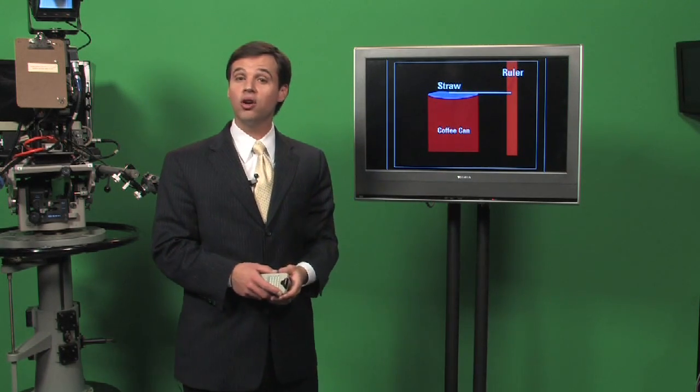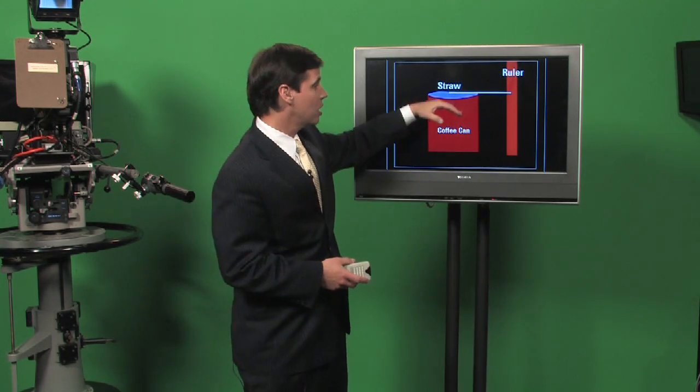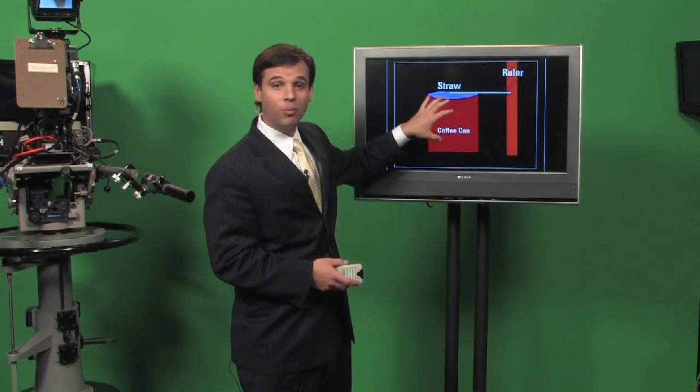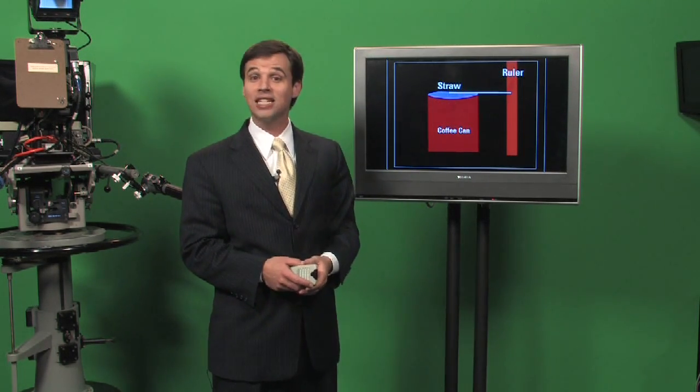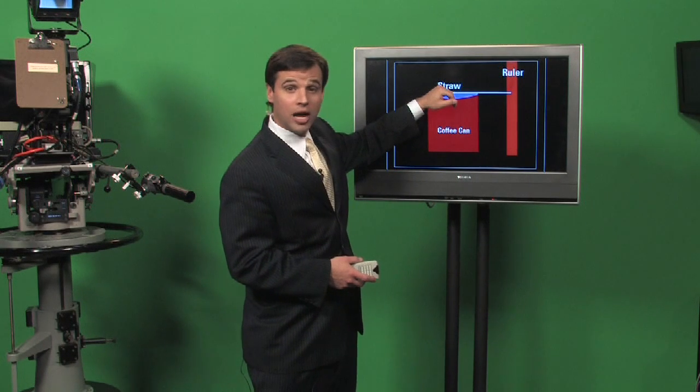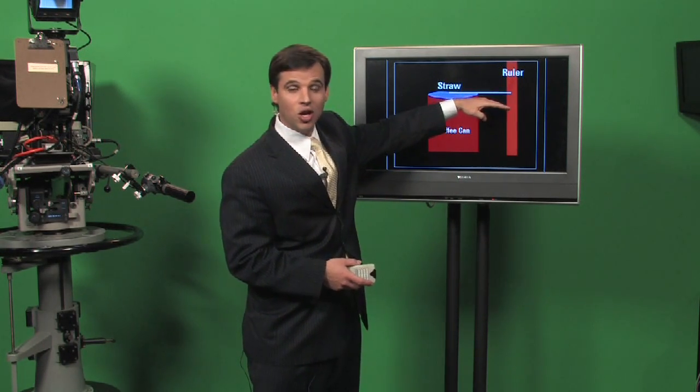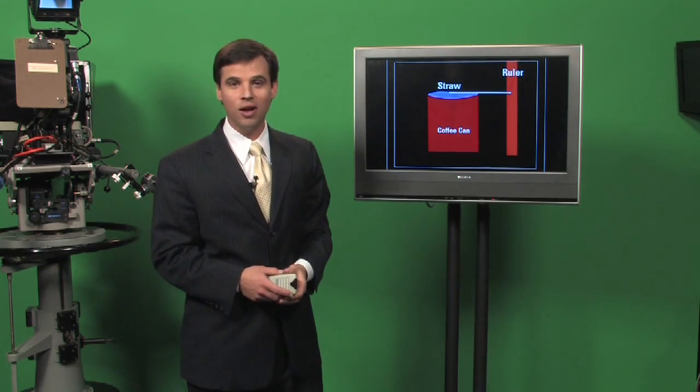On days where the pressure on the outside of the can decreases, that's going to cause the balloon to bulge because now the pressure on the inside of the can is higher. So as the balloon bulges upward, the straw will tilt down showing you a lower measurement of air pressure.